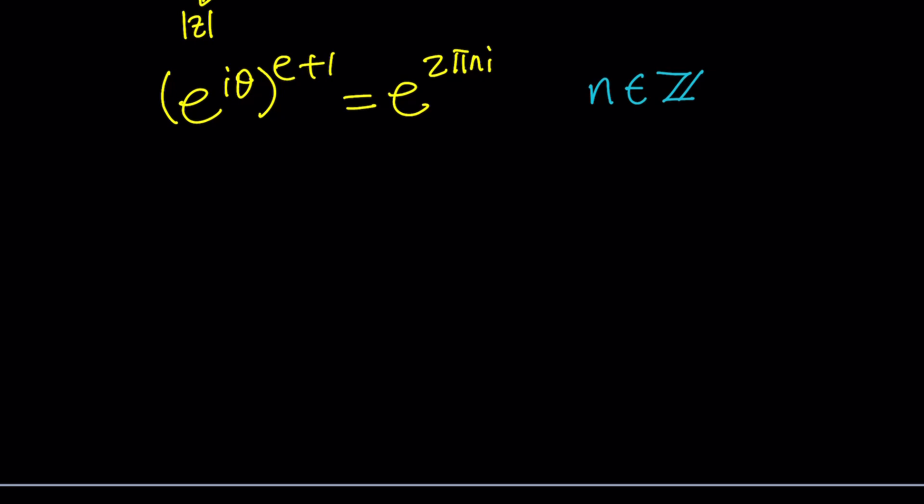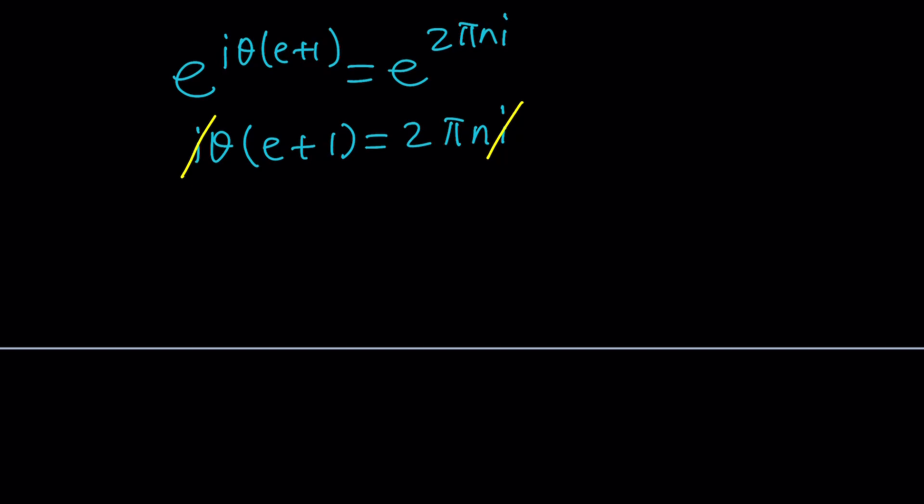We can distribute and write this as e to the I theta times e plus 1 equals e to the power 2 pi n I. From here we get I theta times e plus 1 equals 2 pi n I. I is going to cancel out, leaving us with something simpler. Notice that we can find theta from here. Theta becomes 2 pi n over e plus 1, where n is an integer.